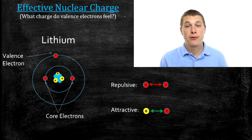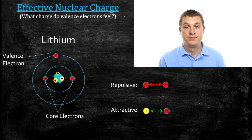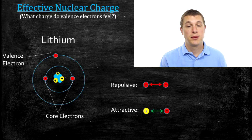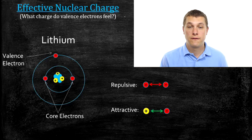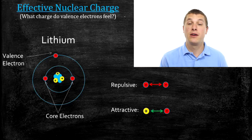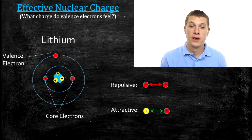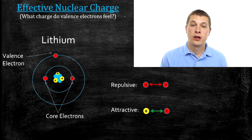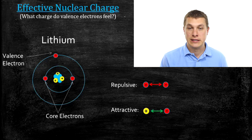Welcome to Real Chemistry. Today we're going to talk about effective nuclear charge. We're going to do three things: first, I'm going to introduce what effective nuclear charge is, then I'm going to talk about how you can calculate it, and lastly we're going to go over the periodic trends for effective nuclear charge.